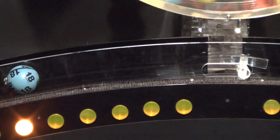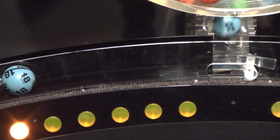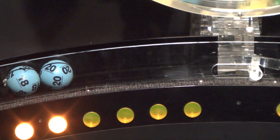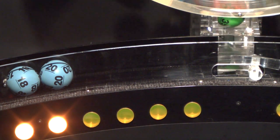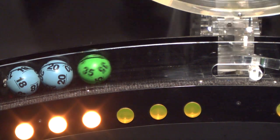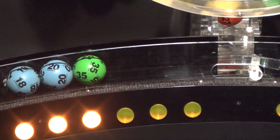Our first number up is number 18. After that we have number 20. And here comes number 35. If you've matched these three numbers, you've already won a prize.